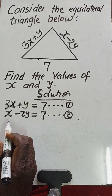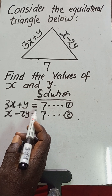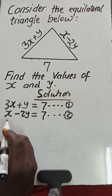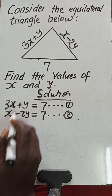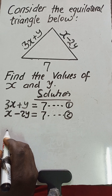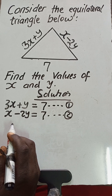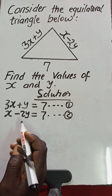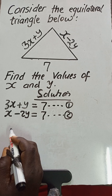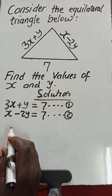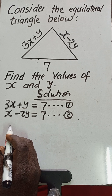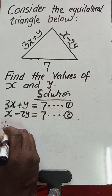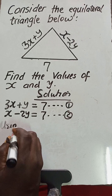From here, we can solve for x and y using any method for solving simultaneous linear equations — the elimination method, the substitution method, the matrix method, or even the graphical method. If we choose the substitution method, we'll start with Equation 2.